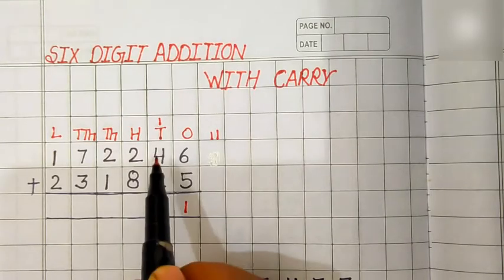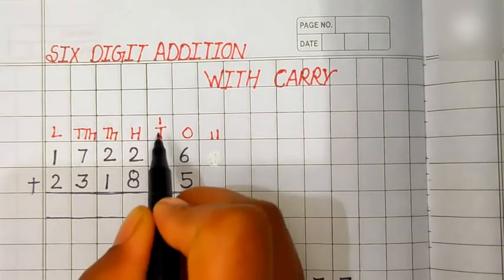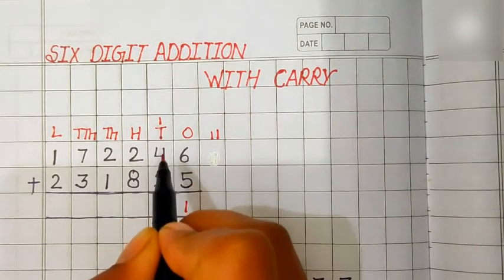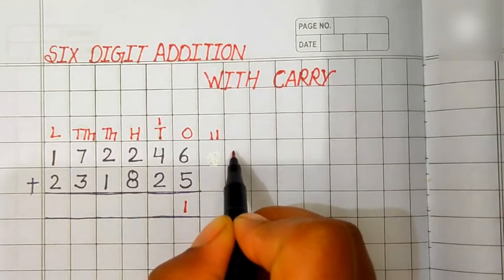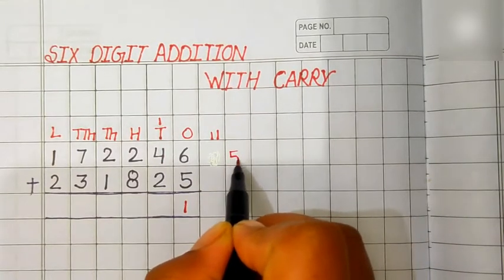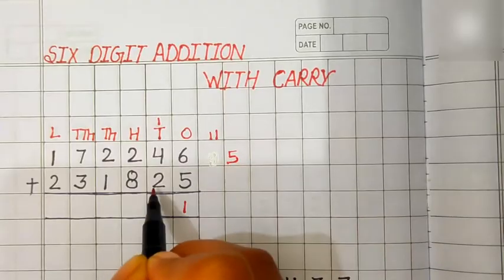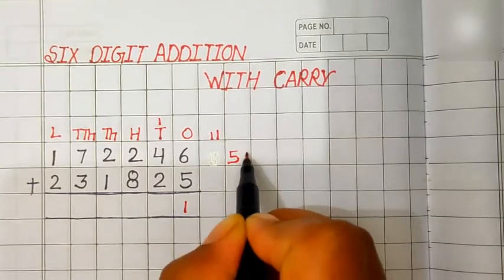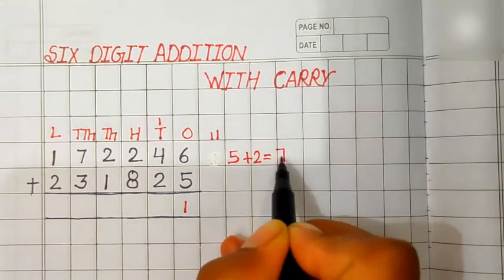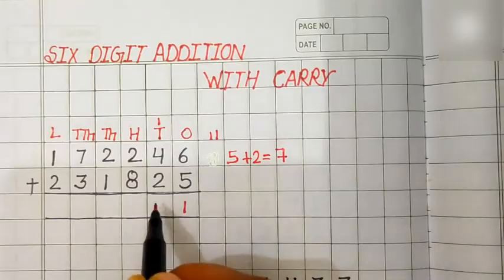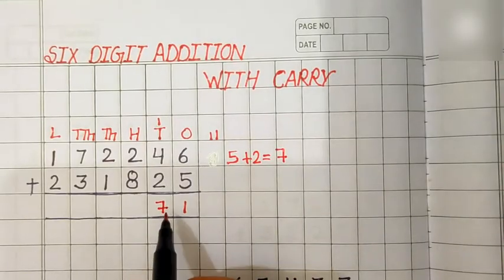Add the digit at 10 place. 1 carry plus 4 is equal to 5. 5 plus 2 is equal to 7. Answer is 7.